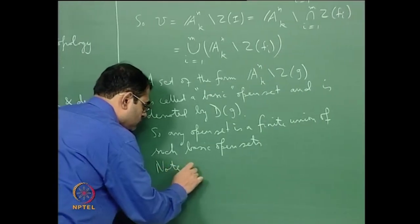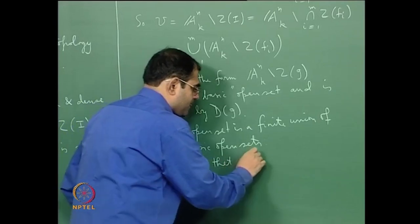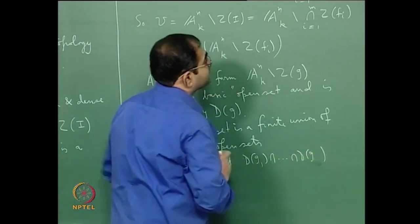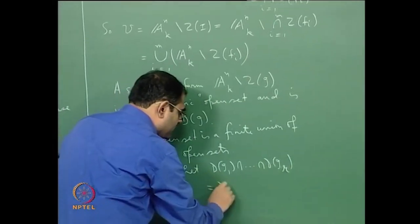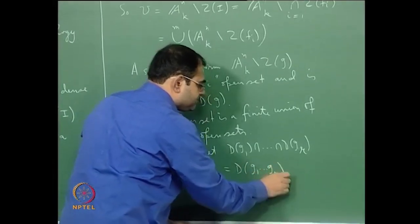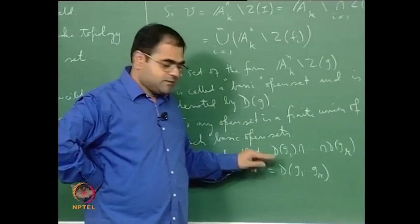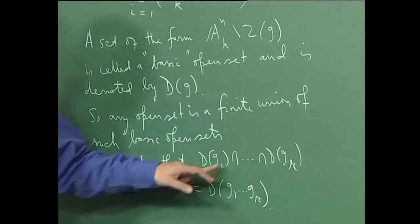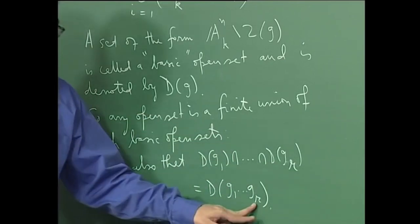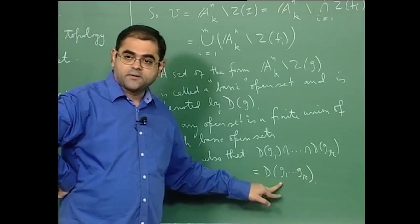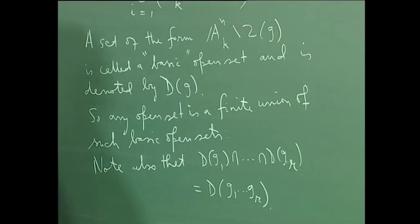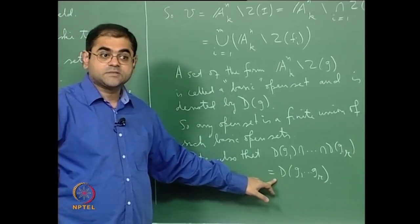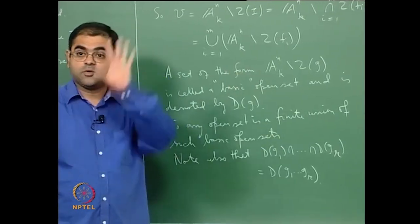Note also that D(g_1) ∩ ... ∩ D(g_r) = D(g_1 · g_2 · ... · g_r). This is clear because the intersection of the D(g_i)'s looks at those points where none of the g_i's vanish, and none of the g_i's vanish at a point if and only if their product does not vanish at that point. So basic open sets are closed under finite intersections, and their finite unions give all possible open sets.